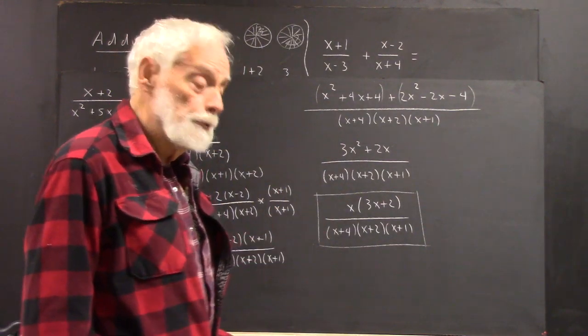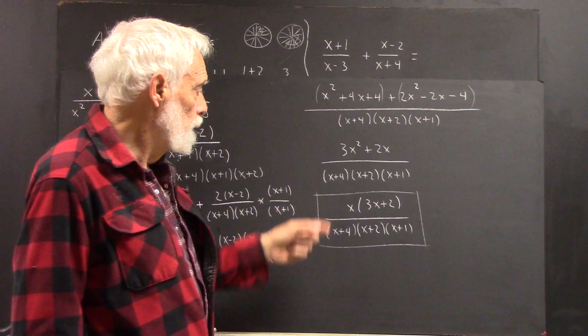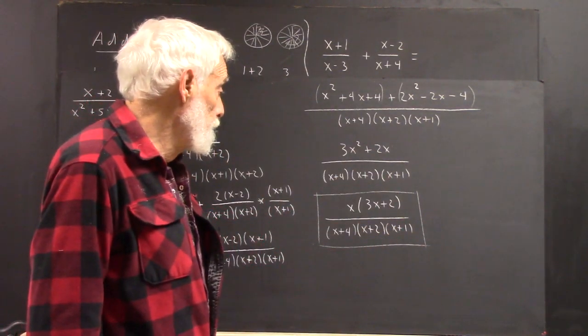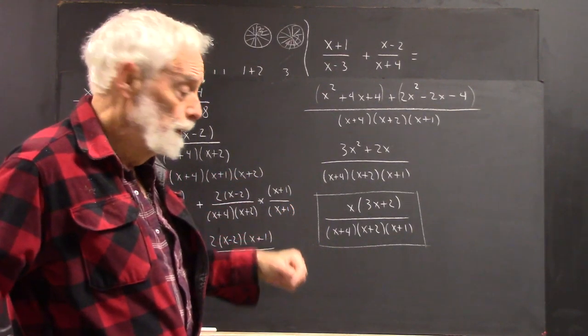We factor the numerator to be sure that it doesn't have any factors common to the denominator. Well, 3x plus 2 doesn't appear down here, and x doesn't appear as a factor down here. I mean, you've got x's here, but they're not factors.